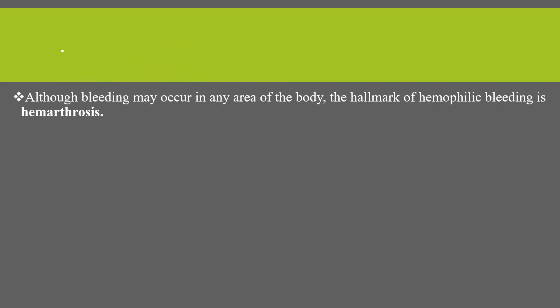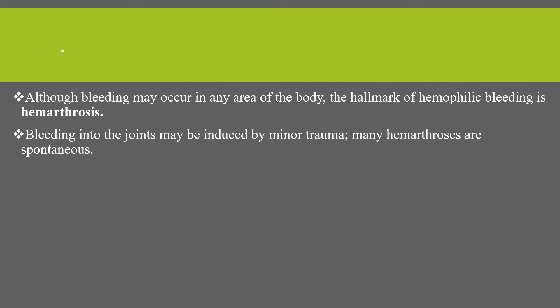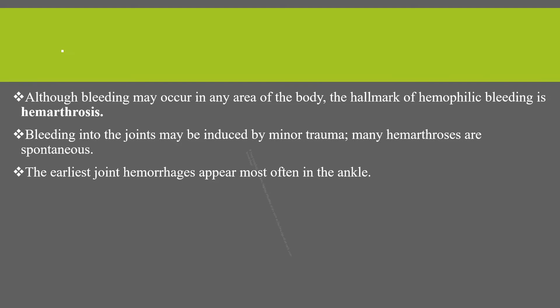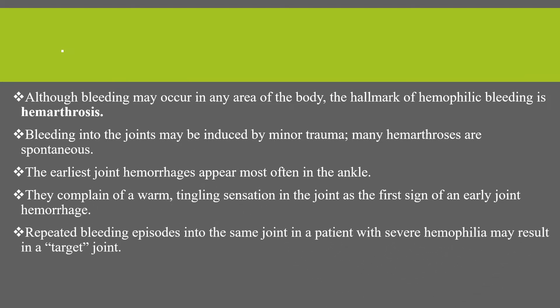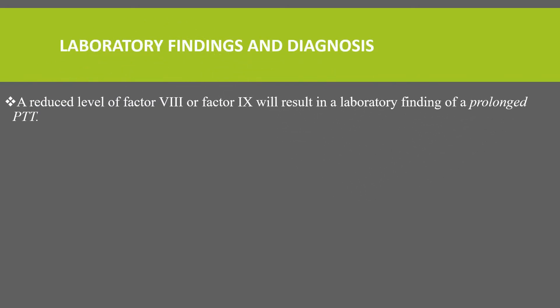Although bleeding might occur in any area of the body, the hallmark of hemophilia is hemarthrosis — bleeding into the joints. Bleeding into a joint might be induced by minor trauma, and many hemarthroses are spontaneous. Joint hemorrhages appear most often in the ankle. The complaint of a warm tingling sensation in the joint is often the first sign of an early joint hemorrhage. Repeated bleeding episodes into the same joint in a patient with severe hemophilia may result in chronic joint damage.